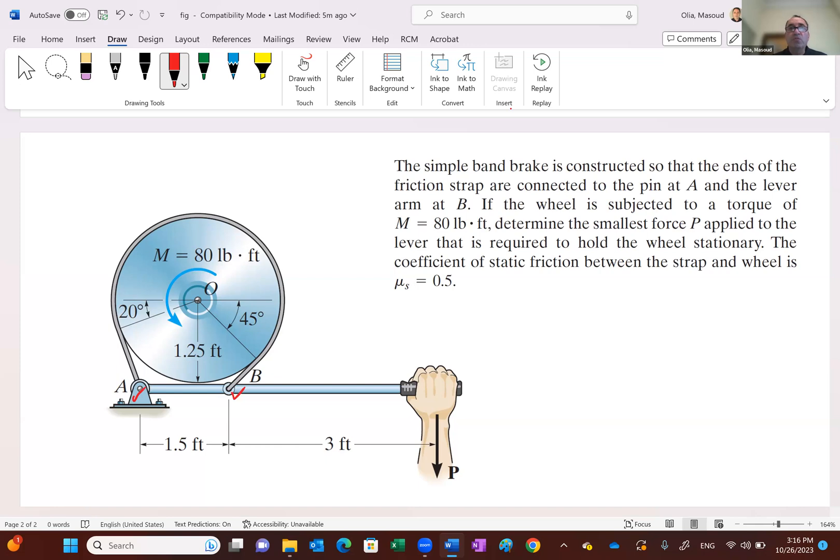If the wheel is subjected to a torque of 80 pounds per foot, you see that the direction of motion is what then? The impending motion is this way. I'm sorry, it's this way. Even though the torque is acting on it because we are pulling it down with the force P. So this should be then the tension T1, and this should be tension T2, based on what I just showed you a minute ago.